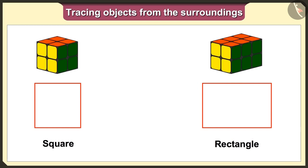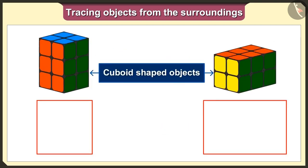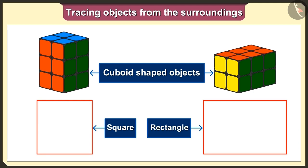Yes, so Talman, remember that if we will keep the cube shaped toy in any way and trace it, then we will always get the square shape. And if we will trace the cuboid shape, then we will always get either a square or a rectangle shape.